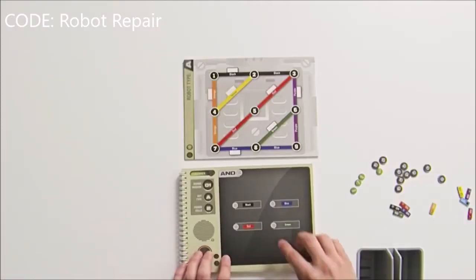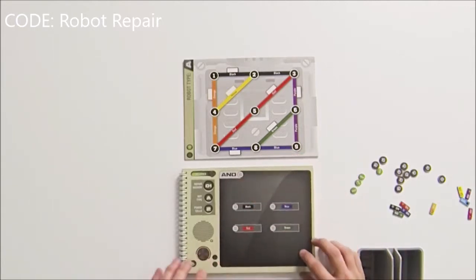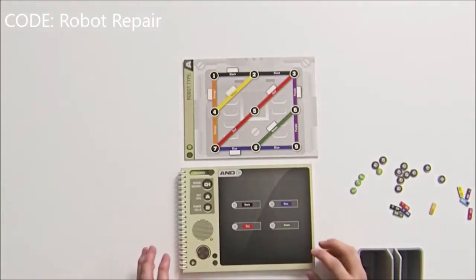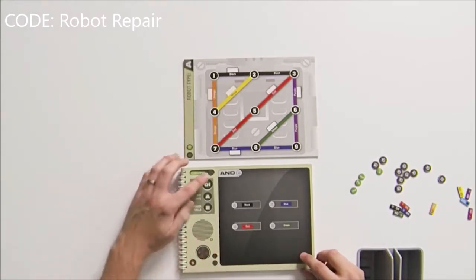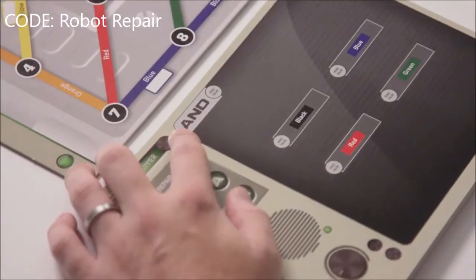Our clue panel, which is this space here, gives us the information we need to solve the challenge. Now on each clue panel there's a logic operation, as it's called, in the top corner.